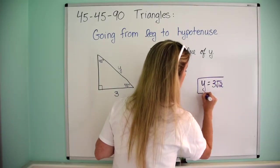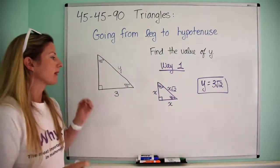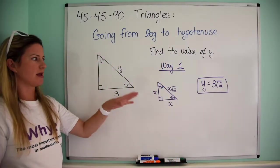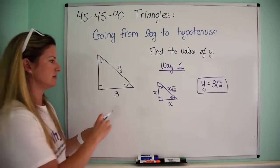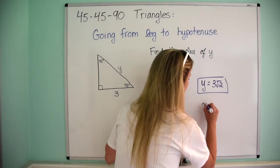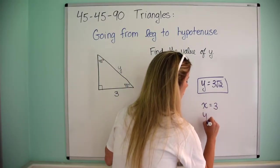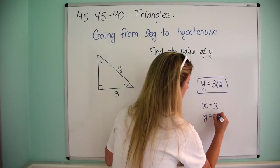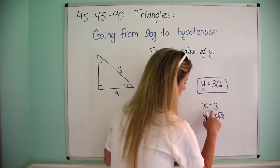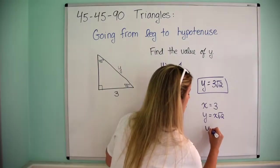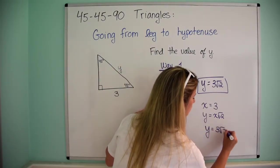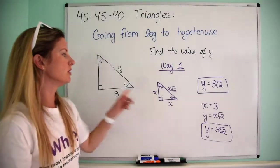Okay, now the long way to do that, this is still way one but the long way to do that is saying x equals 3, y equals x root 2. So then because x equals 3, y equals 3 root 2.